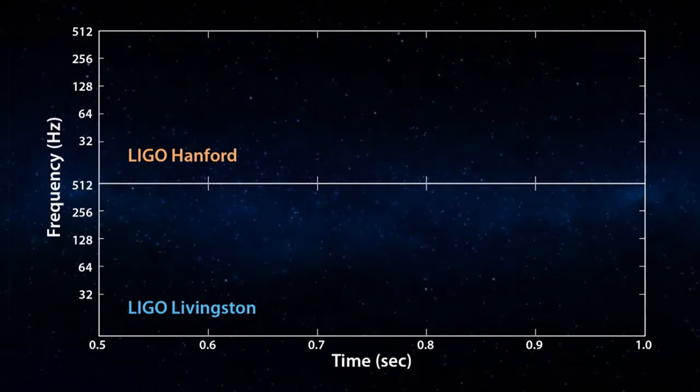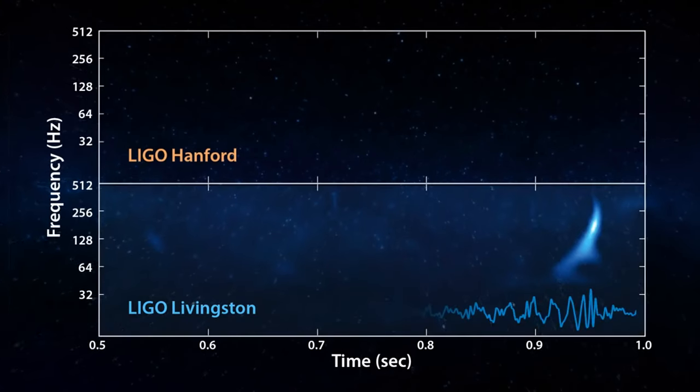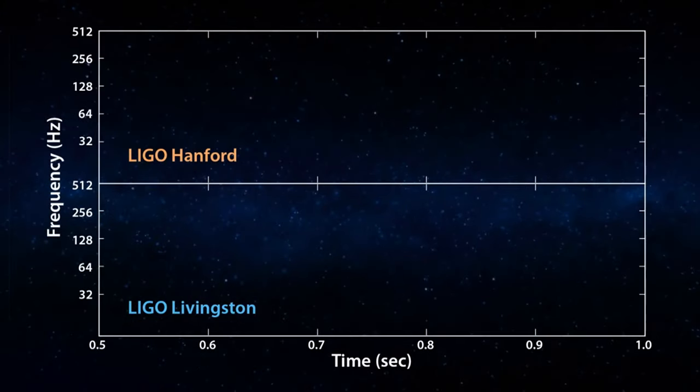At 9:50 and 45 seconds coordinated universal time on the 14th of September 2015, a signal was detected by the LIGO detector in Livingston and 6.9 milliseconds later in Hanford.